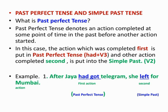Now here you see an example. Jaya got a telegram. She left for Mumbai. Here Jaya got the telegram first, and later she left for Mumbai. So what is the first action here? Getting the telegram — so that one we use in past perfect: 'had got.' And the next action, she left for Mumbai — leaving for Mumbai — is in simple past: 'left.' So: after Jaya had got the telegram, she left for Mumbai.